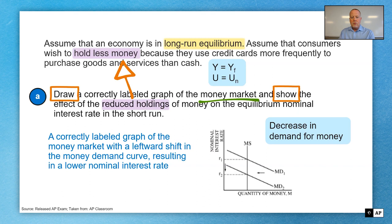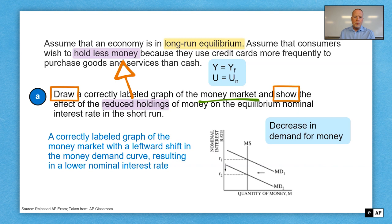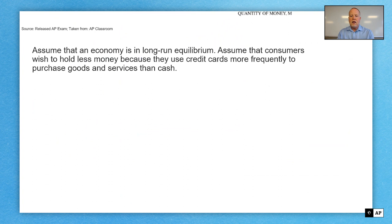Anytime you draw a graph, remember the acronym ACE: axes, curves, equilibrium. Always check to make sure that you have properly labeled your axes, your curves, and your equilibrium in every graph that you do.